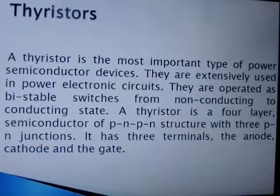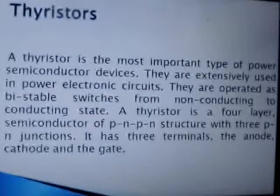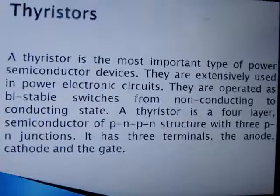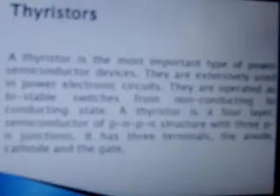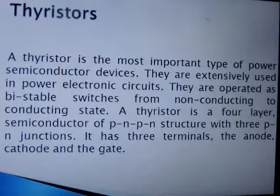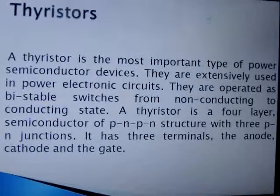A thyristor is a semiconductor device which is used as a power switch in power electronics. It is basically a four-layer device having three junctions J1, J2, and J3. In transistors we have three layers PNP or NPN, whereas in a thyristor we have four layers PNPN and three terminals: anode, cathode, and gate.